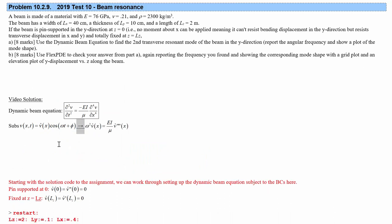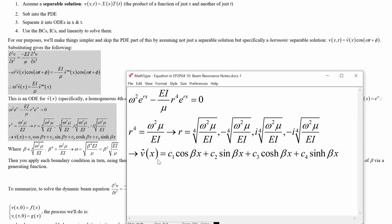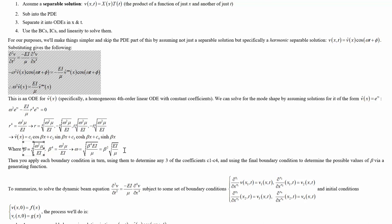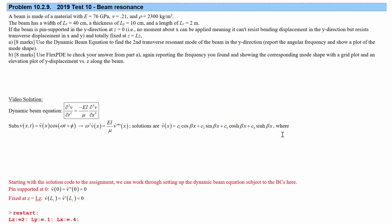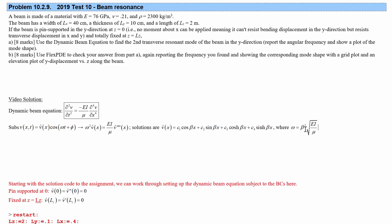Once we've done this, we get our ordinary differential equation on V hat, which we can solve. The solutions involve beta, which we find by applying boundary conditions. Beta is related to EI over mu and omega by a specific relationship, which leads to a condition on frequency: omega equals beta squared times the square root of EI over mu.